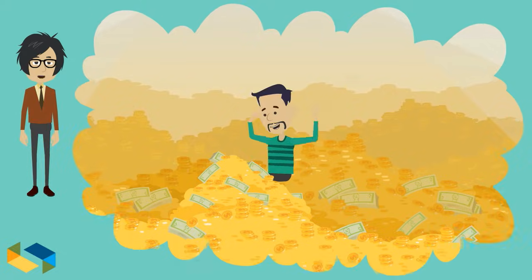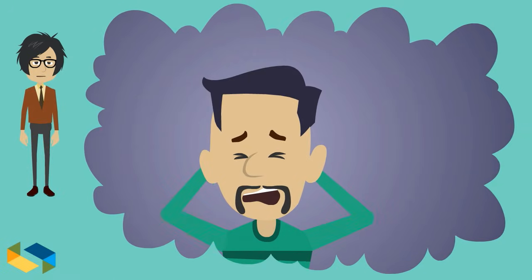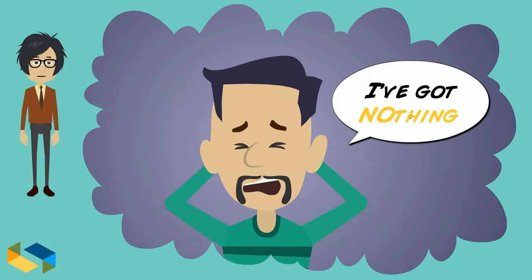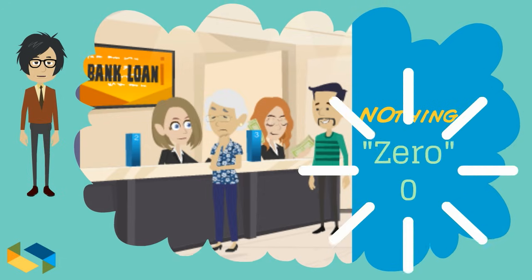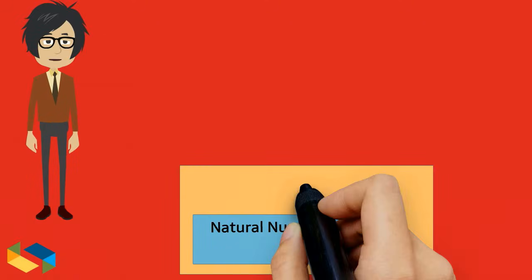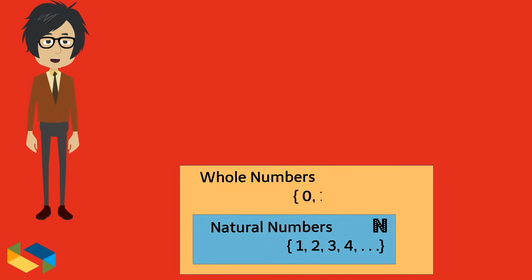You may be rich one day, but there are days when you're flat broke with no money left. So when it comes to describing the notion of nothing, a number 0 was discovered. When we add the number 0 to the set of natural numbers, we get what is called the whole numbers, symbol W.